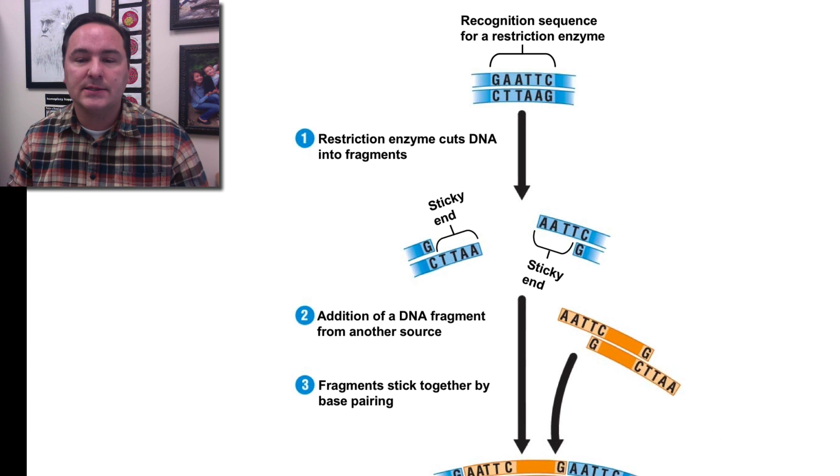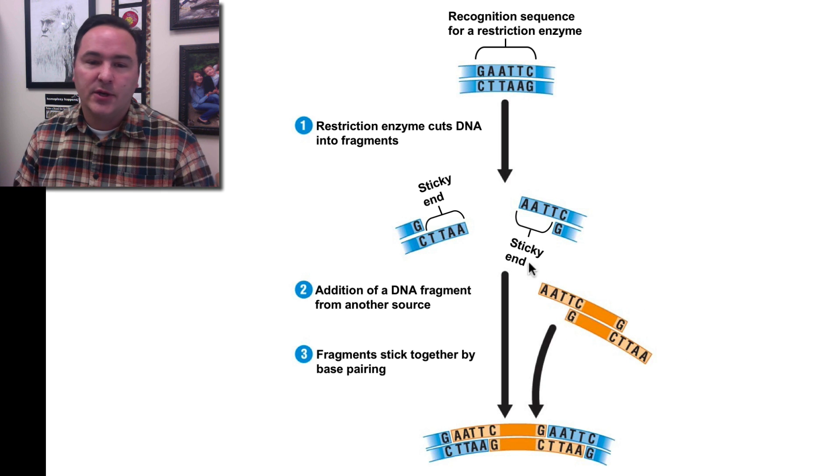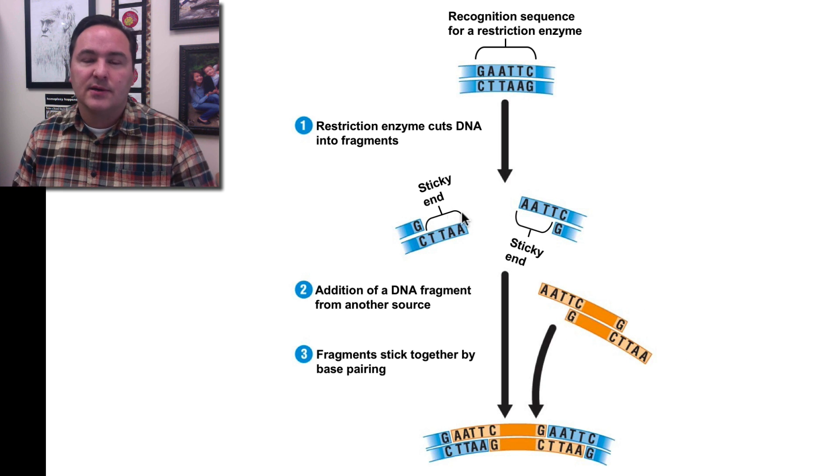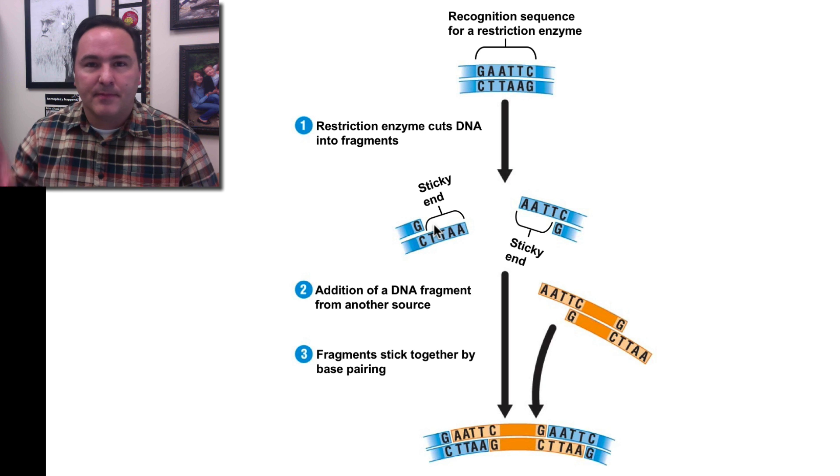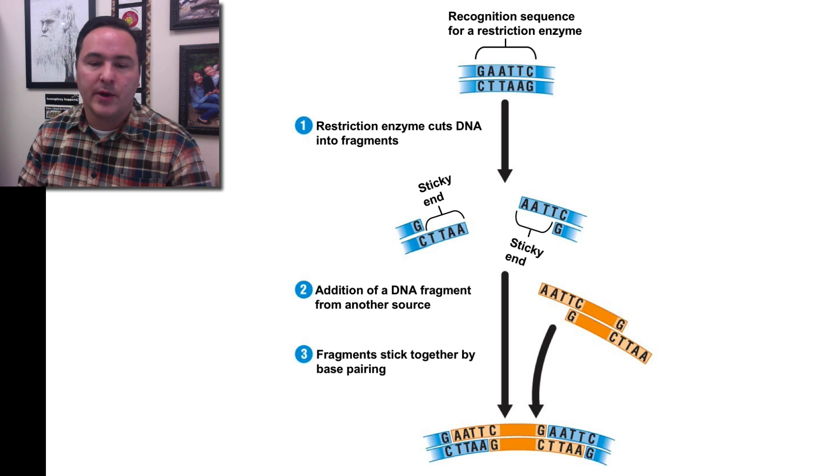we could cut that gene out, and then if we cut it out with the same enzymes, it's going to have the complementary sticky ends. So, therefore, you can take that gene of interest, and you can stick it into this bacterial plasmid that we're going to use,